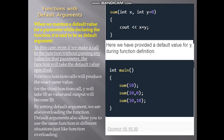Functions with default arguments — when we mention a default value for a parameter while declaring the function, it is said to be a default argument. Even if we make a call to the function without passing any value for that parameter, the function will take the default value specified. In the example, there are two parameters x and y, both of type int, but y has been declared with a default value of 0. So y is the default argument.